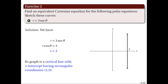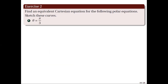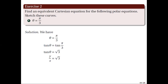A similar technique is used when the given polar equation has cosecant theta instead of secant theta. For number 5, we have theta equal to pi over 3. In examples like this, r can take any real value, giving us a line through the pole that makes an angle pi over 3 radians with the polar axis. In converting this to a Cartesian equation, we evaluate tangent theta, which gives us tangent theta equal to square root of 3. Using our conversion equation for tangent theta, we get y over x equal to square root of 3, since y equal to r sine theta and x equal to r cosine theta. Isolating y gives us y equal to square root of 3 times x. Hence, its graph is a line through the origin with slope square root of 3, as shown on the right.